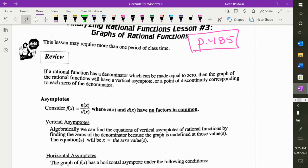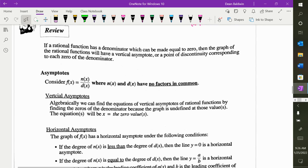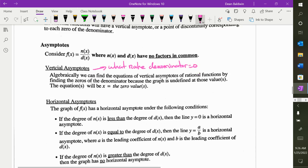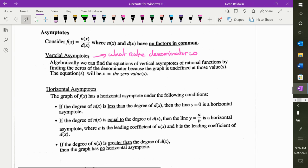We looked at rational functions. You have vertical asymptotes that are what make the denominator equal zero. Whatever makes the denominator zero is a vertical asymptote. The horizontal asymptotes, we had all those rules that you need to remember.